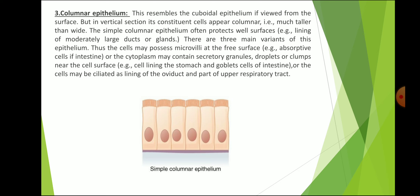The third type of simple epithelium is columnar epithelium. This resembles cuboidal epithelium when viewed from the surface, but in vertical section its constituent cells appear columnar — that is, much taller than wide. The free cell surface is smooth and the nuclei are nearly always located towards the base. This basic form is exhibited rarely in the gallbladder.